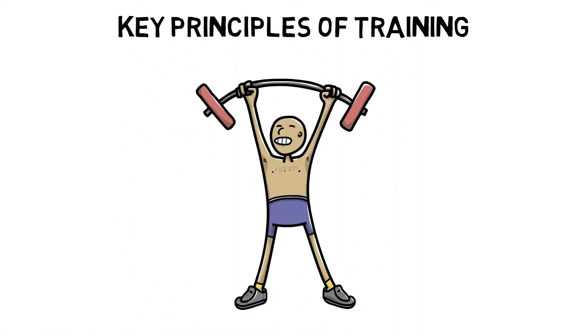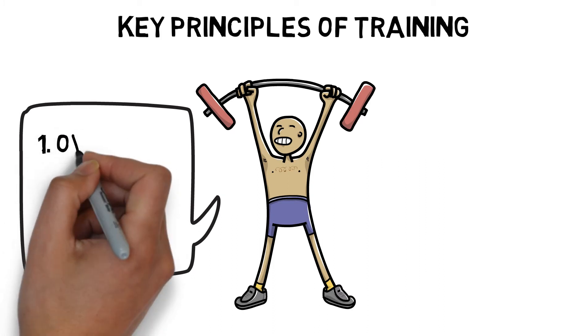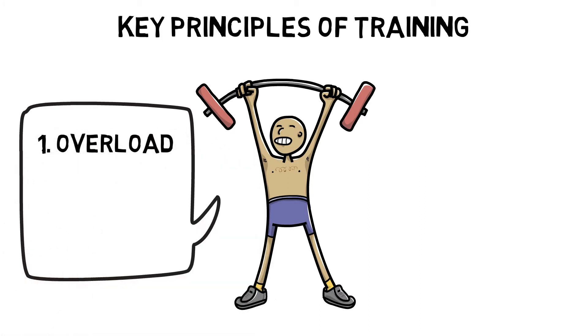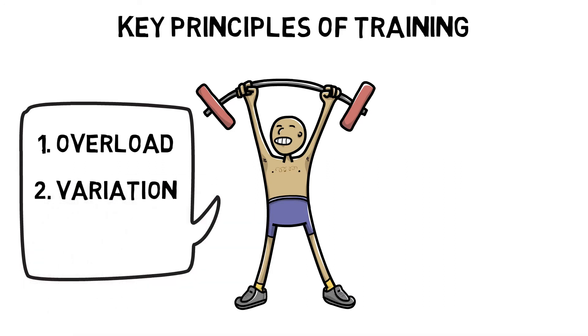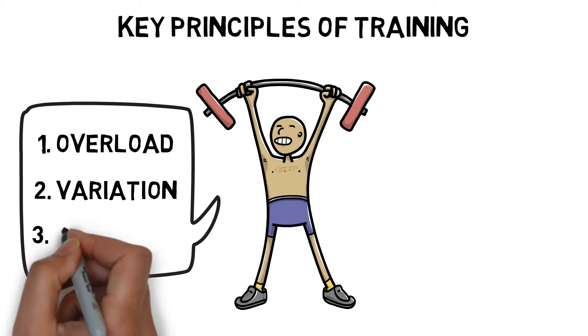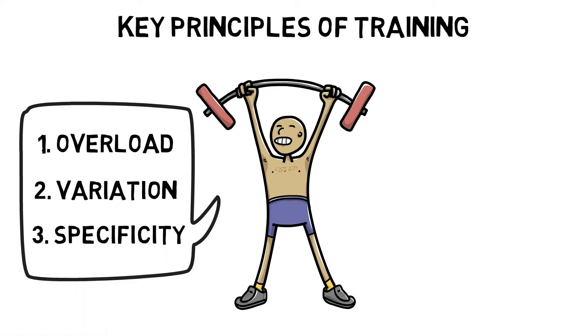There are three key principles of training. Overload is where a stimulus of sufficient strength, duration, and frequency forces an organism to change and adapt. Variation is the manipulation of various training variables. And specificity, which describes how the body will adapt to the specific demands that are placed on it. All of these principles help promote adaptation.